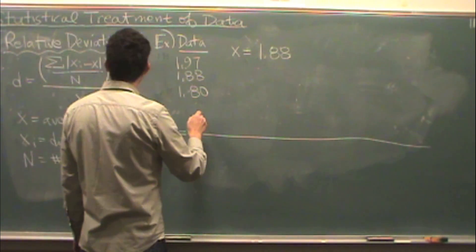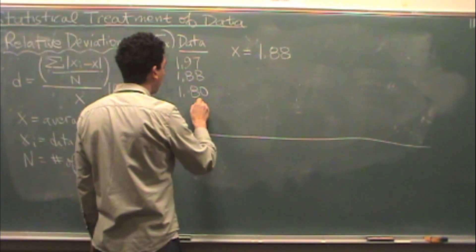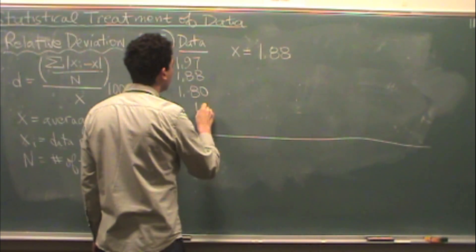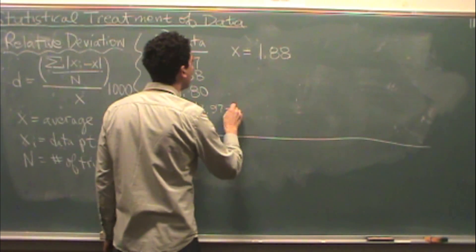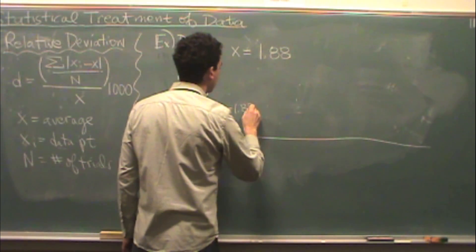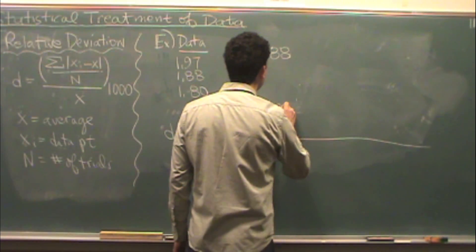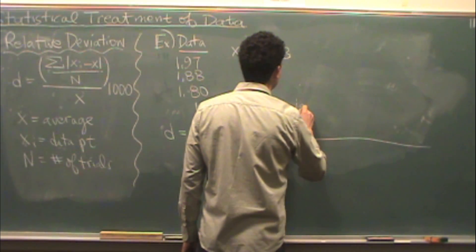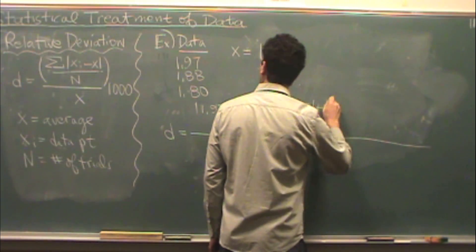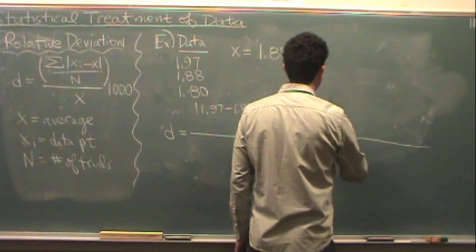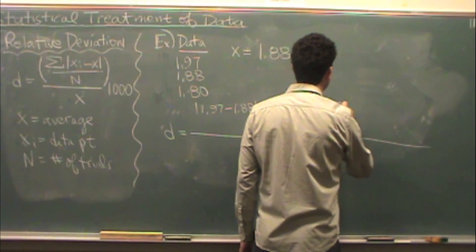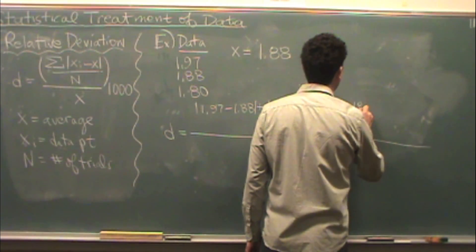So I'm going to do in the top here, take a look at each data point. 1.97 divided by 1.88 absolute value. Do that for that one, 1.88 minus the average, 1.88. And for the last one, absolute value of 1.80 divided by 1.88.